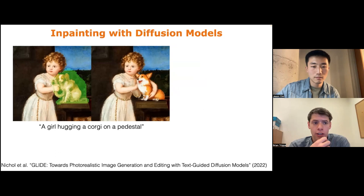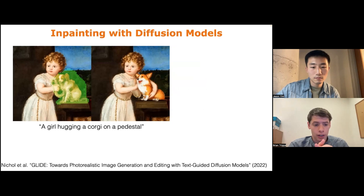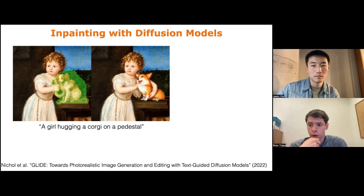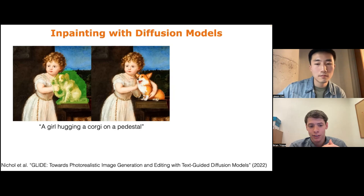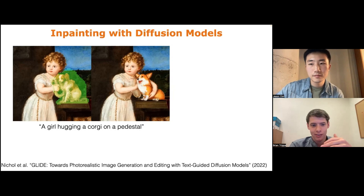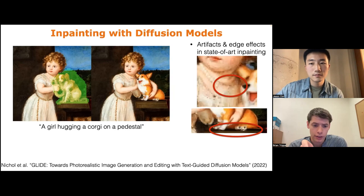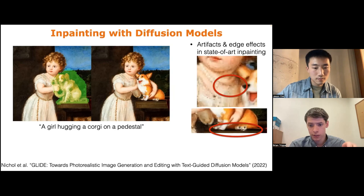Beyond text-conditional image generation, diffusion models have shown remarkable performance in text-conditional image inpainting. For example, in a recent paper, a painting has a dog region masked in green, and the model is asked to inpaint the image with a prompt describing a girl hugging a corgi on a pedestal. The results are impressive, but when examined closely, artifacts appear at edges between inpainted and unmasked regions. For protein design, this is very problematic: errors of even one or two angstroms in residue distances can lead to physically impossible structures and break designability.